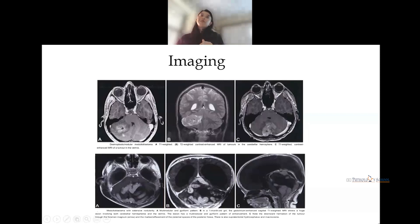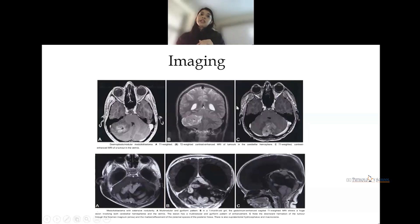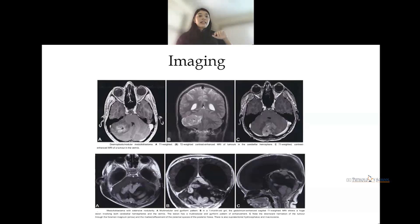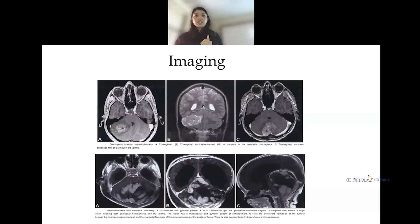On T2-weighted imaging the tumor is iso- to hyperintense, seen here in the left cerebellar hemisphere. On contrast T1-weighted imaging, there is homogeneous enhancement present in the vermis. The images below show medulloblastoma with extensive nodularity — the entire cerebellar hemisphere and vermis show prominent nodularity with a bunch-of-grapes appearance on MRI. In the third image, macrocrania is visible due to pent-up CSF.